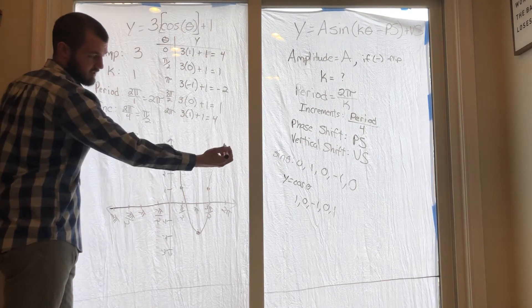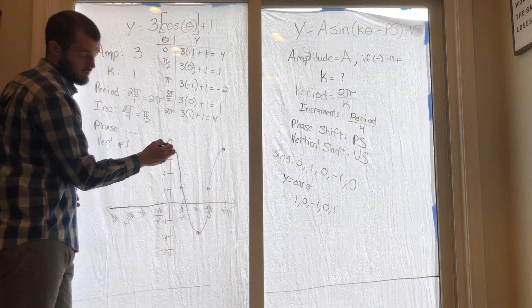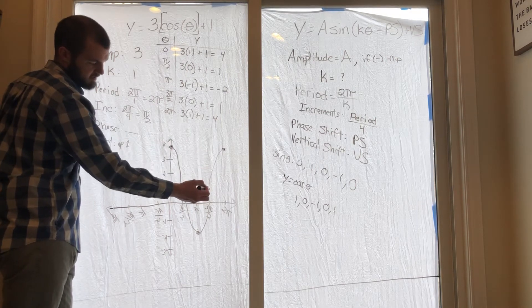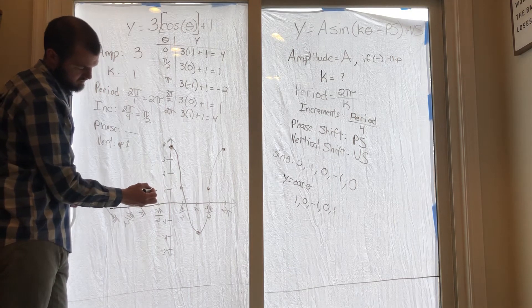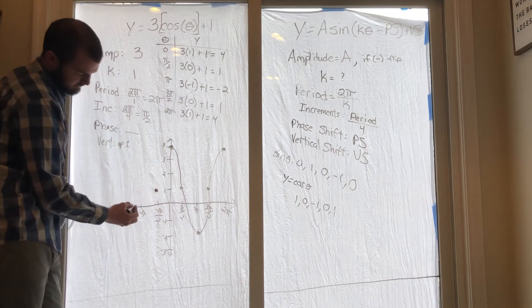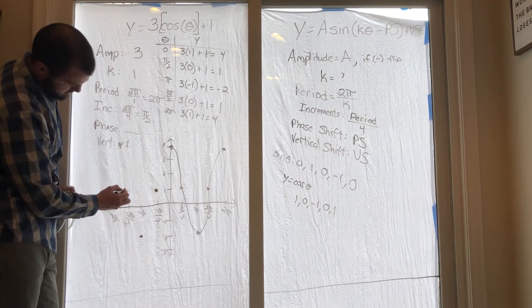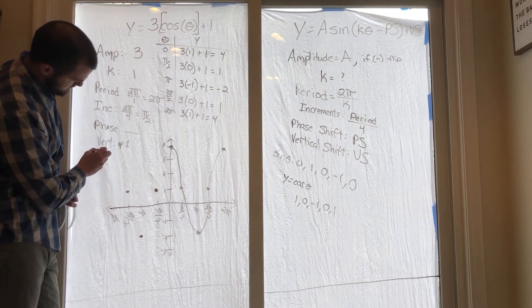Same thing - you were here at 4, you already have that point, right? What's the next one over? That one. Next one over is that one. Next one over is that -2. Next one over is that 1, next one over is that 4.